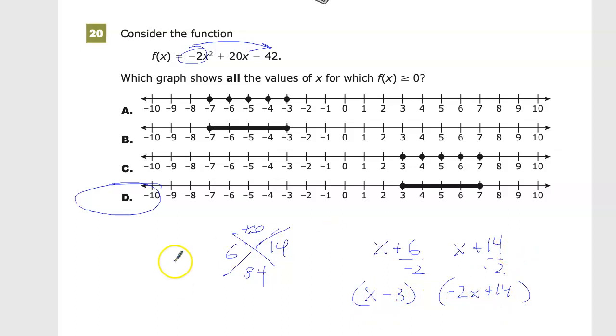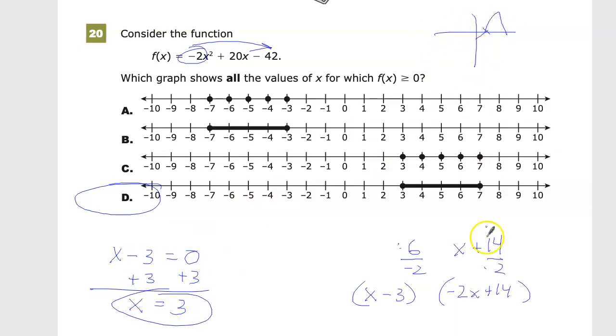On the other one, I get -2x + 14. Those are my factors. I need to solve them by setting them equal to 0. For x - 3 = 0, I add 3 to both sides, so x = 3. That's my first zero where the parabola crosses the x-axis.